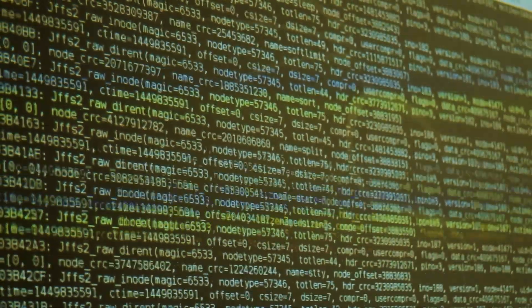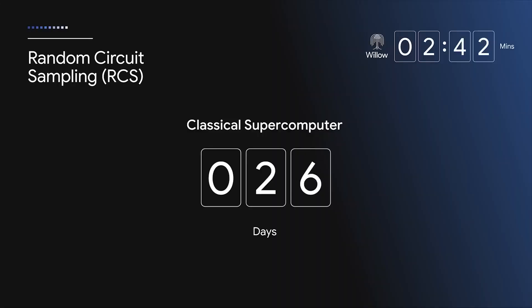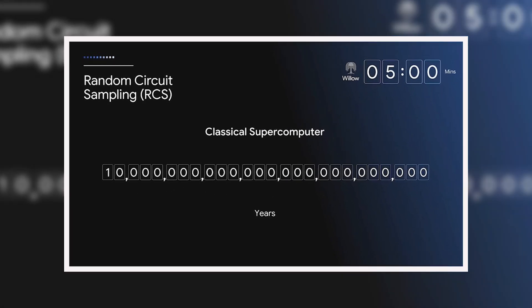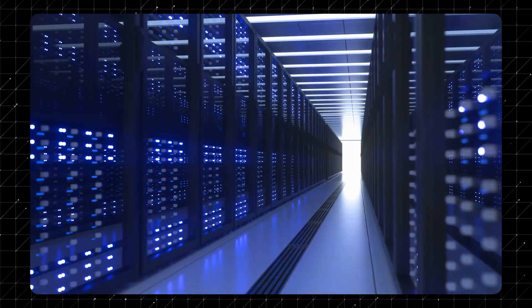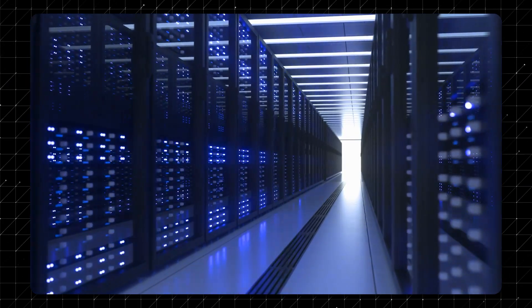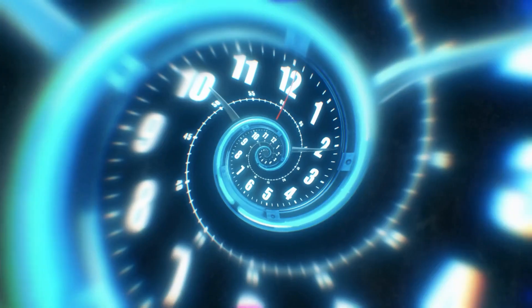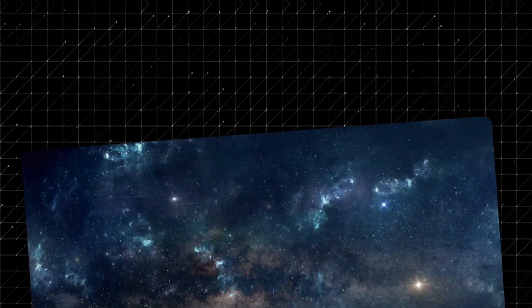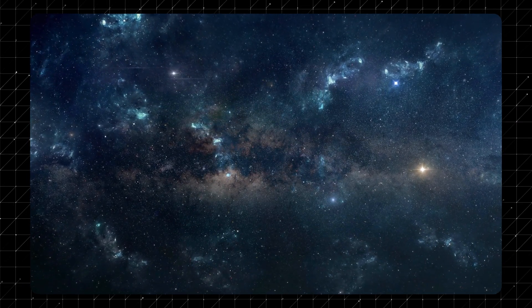When it comes to speed, Willow is in a league of its own. Using the Random Circuit Sampling benchmark, a standard for evaluating quantum performance, it performed a computation in under five minutes. To understand the gravity of this, let's compare. The same calculation would take today's most powerful classical supercomputers a staggering ten septillion years to complete. Let's pause and unpack that. Ten septillion years is an incomprehensibly long time. Hundreds of thousands of times longer than the universe has even existed.